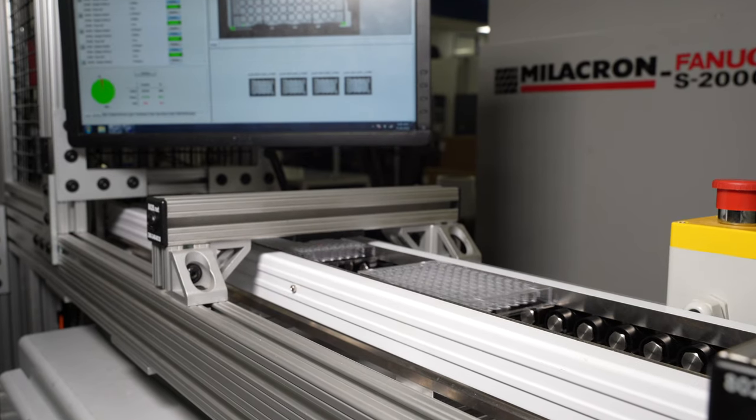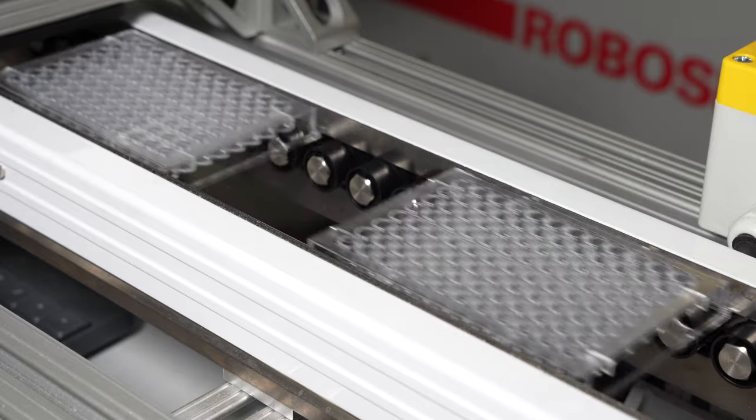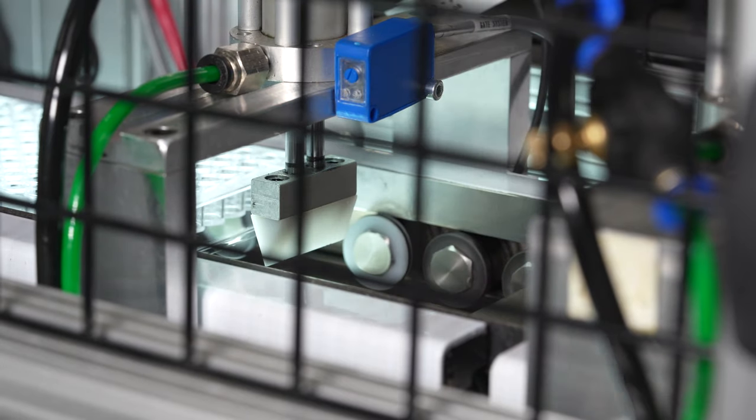Prior to the use of automation within this work cell, parts were simply ejected from the mold and dropped onto a conveyor belt along with the runner, which often led to scratches and higher reject rates across the board.